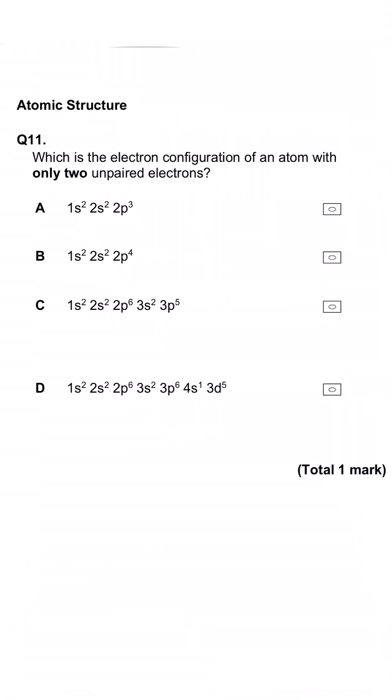This question is asking us which electron configuration will have only two unpaired electrons. We're only interested in the outermost subshells, and so for instance in the first one we have 2p3. There are three p orbitals and each one will have one electron in each because electrons spin free before you pair them up in an orbital.